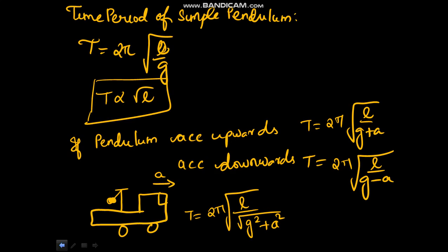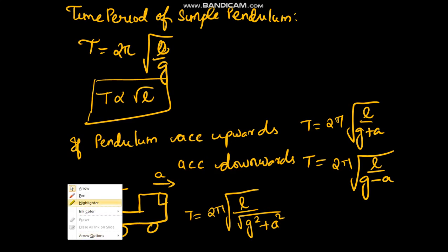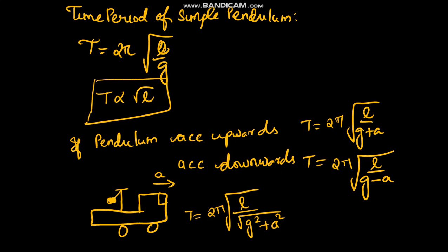Welcome to my YouTube channel. In this video we will see the simple pendulum concept with its time period in different types of cases. The time period of a simple pendulum is T = 2π√(L/g), where L is the length of the simple pendulum.